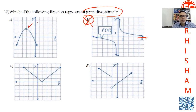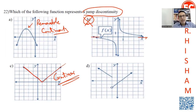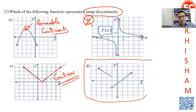This one is called removable continuity. This one is continuous — you can draw the whole graph without lifting the pen from the paper. This one is called removable discontinuity because if you fill in the open point, you get a continuous function. This one is jump discontinuity because you stop here and need to jump to another point to make it continuous.